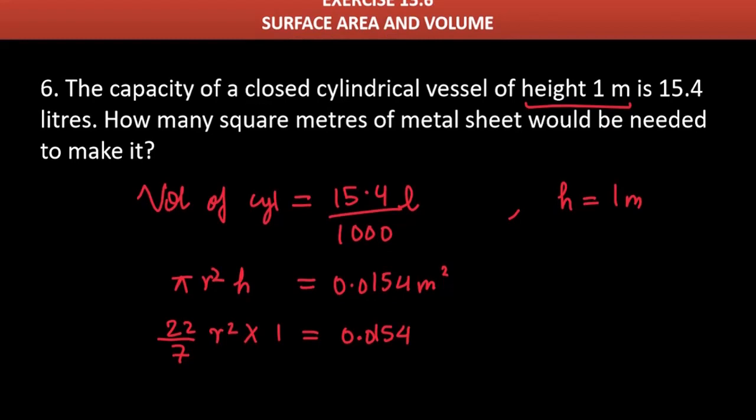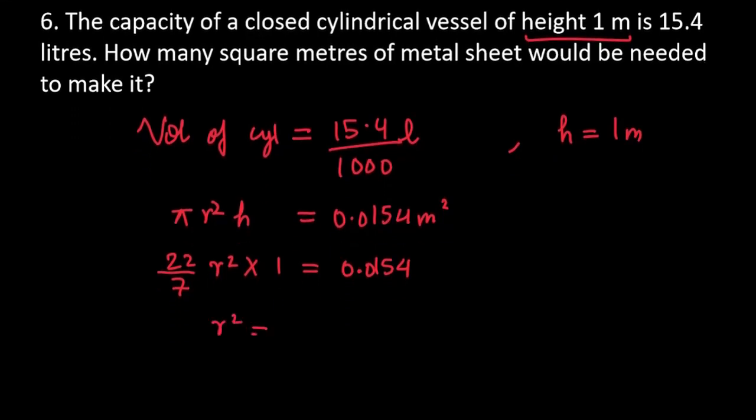Now, what do you do? Cross multiplication use so that you can get what value is. r² is equal to 0.0154 into 7 divided by 22. Now, what do we do? Reduce so that we can get the value of radius, so that we can get the value of how much metal sheet required for a cylindrical vessel to make it.